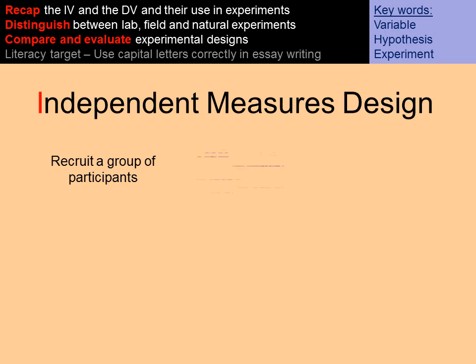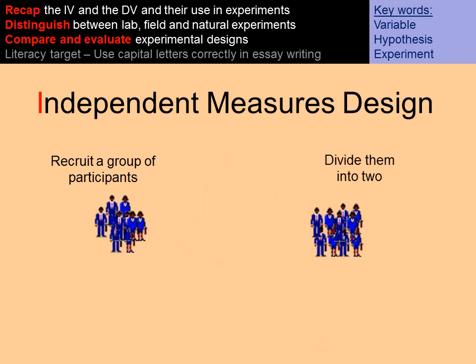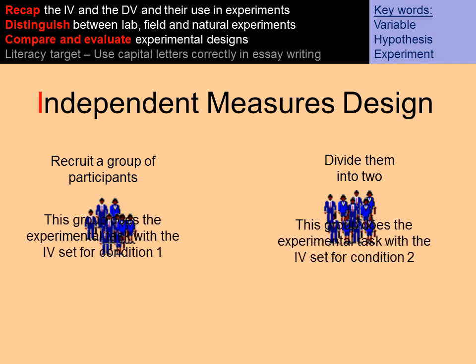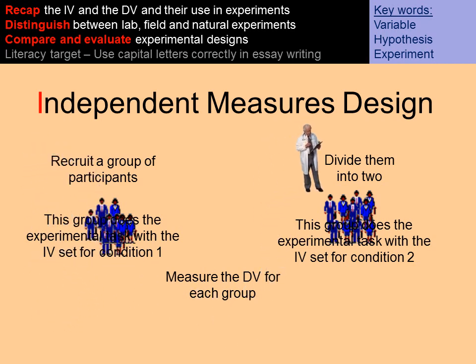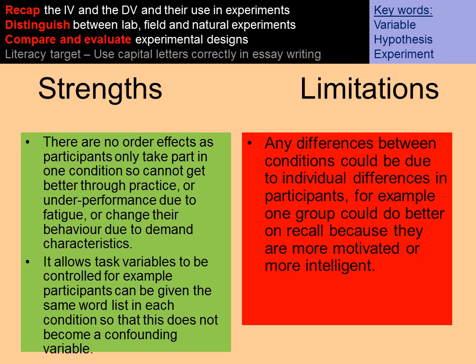The second design is independent measures. You recruit a group of participants and split them in half — half do condition one and half do condition two, then you measure the DV for each group and compare results. There are no order effects because participants are only doing one condition, and task variables can be controlled — for example, participants can be given the same word list within each condition so it doesn't become a confounding variable. However, any differences between conditions could be due to individual differences — one group might have a higher IQ or better memory than the other, making it more difficult to draw conclusions about how much the IV has affected the DV.